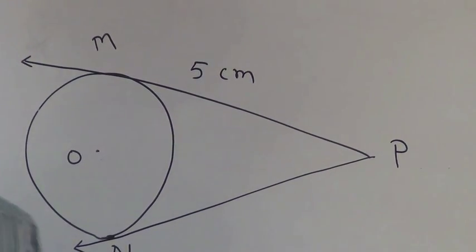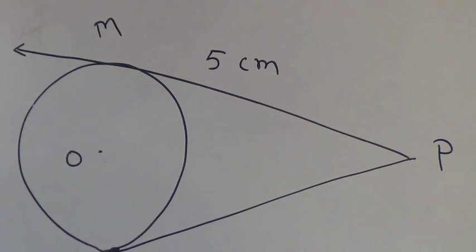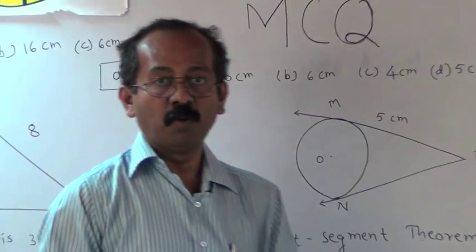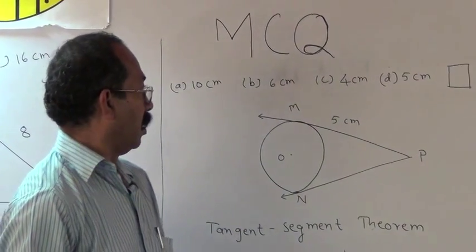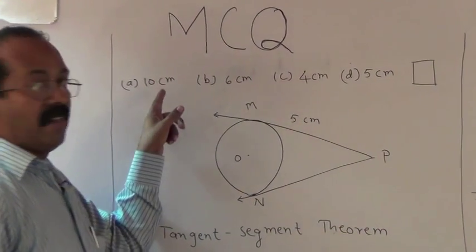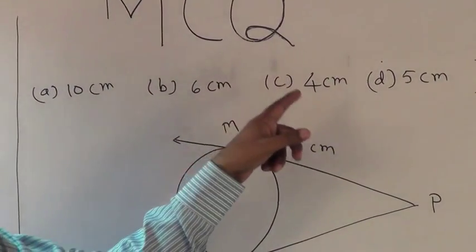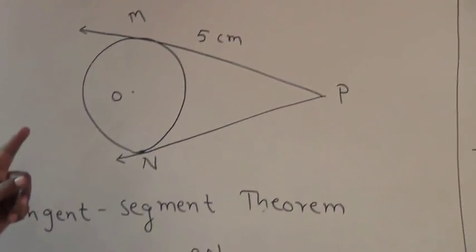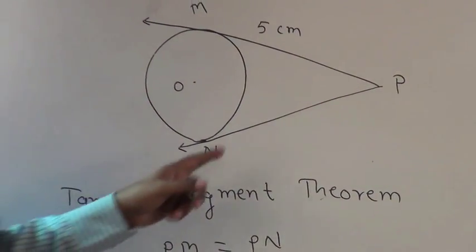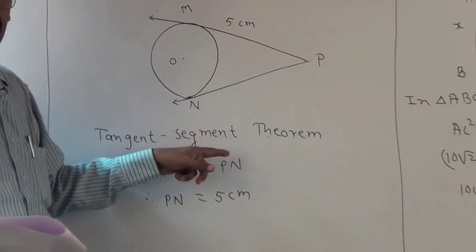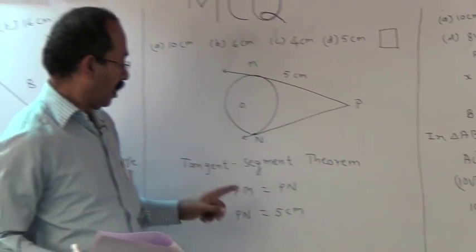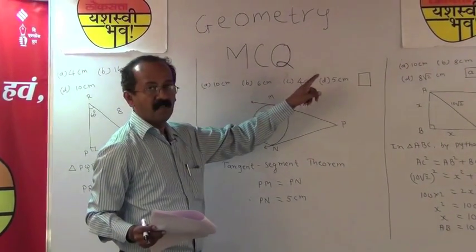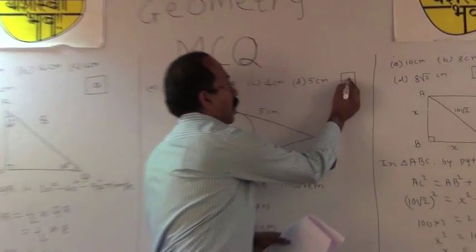Example 6: In the figure, Q is the center of the circle, and PM and PN are tangent segments to the circle. If PM is equal to 5 cm, what is PN? Alternatives: A) 10 cm, B) 6 cm, C) 4 cm, D) 5 cm. By the tangent theorem, PM = PN. Since PM = 5 cm, PN is also 5 cm. Alternative D represents 5 cm, so D is the correct answer.